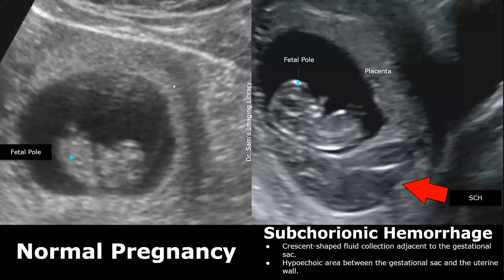In the image on the right, there is a prominent hypoechoic crescent-shaped fluid collection adjacent to the gestational sac. It is also near the margin of the placenta. This is the subchorionic hemorrhage.